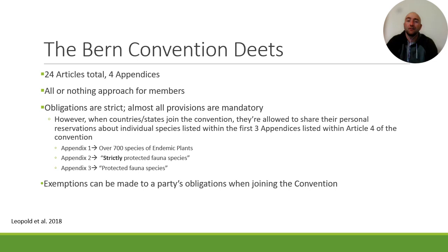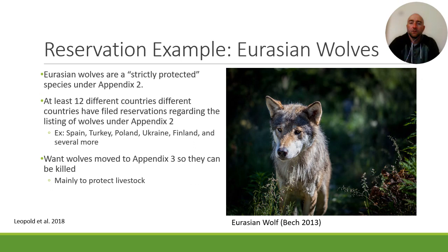Appendix 1 lists over 700 species of endemic plants. Appendix 2 lists strictly protected fauna species — these are species that cannot be exploited at all. Appendix 3 lists protected fauna species, but despite the name, species under this classification can be exploited or culled. A lot of the reservations revolve around larger carnivores, which we're going to talk about next.